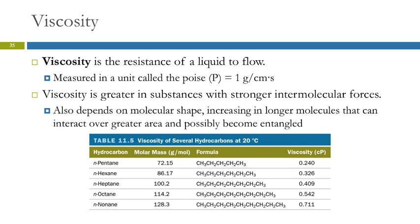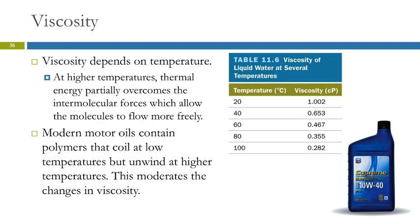How can you make honey pour more quickly? Warm it up. When you heat it, the particles have thermal energy — a form of kinetic energy — and they're able to partially break those forces and flow more easily. So viscosity is dependent on temperature. It also depends on molecular shape because molecular shape affects the strength of intermolecular forces. Looking at these alkanes, we see that viscosity increases as we increase the length of the molecule and the molar mass. Nonane has much more surface area to be 'Velcroed' to other molecules than pentane does.